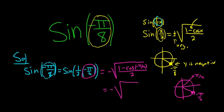This is negative 1 minus square root of 2 over 2, all over 2.